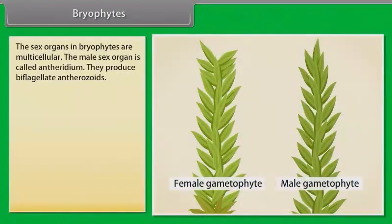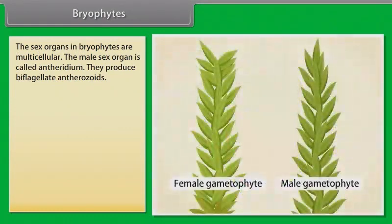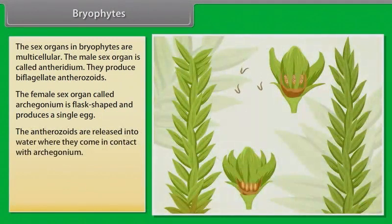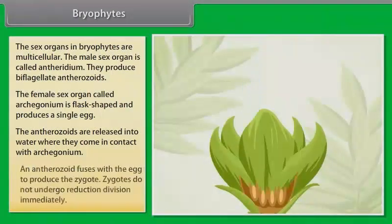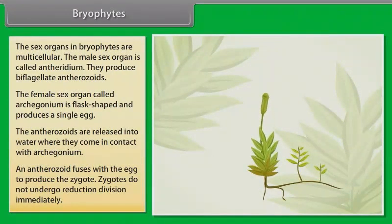The sex organs in bryophytes are multicellular. The male sex organ is called the antheridium; it produces biflagellate antherozoids. The female sex organ, called the archegonium, is flask-shaped and produces a single egg. The antherozoids are released into water where they come in contact with the archegonium. An antherozoid fuses with the egg to produce the zygote, which does not undergo reduction division immediately.